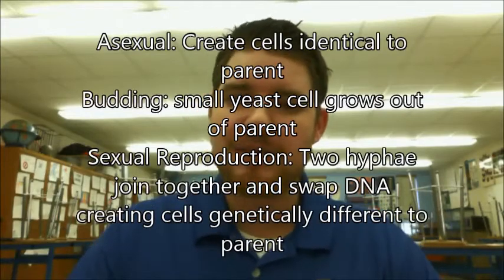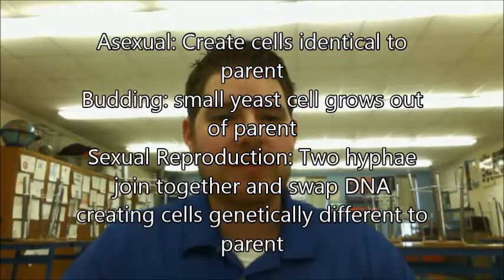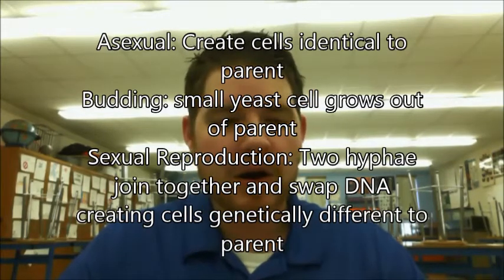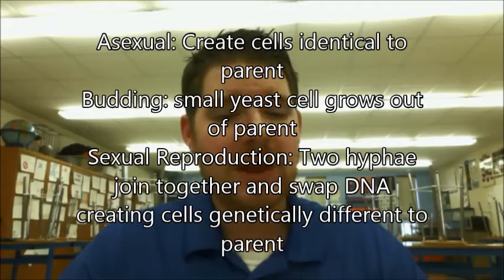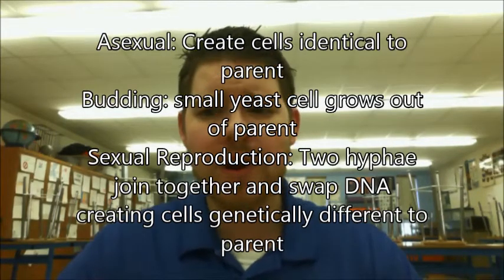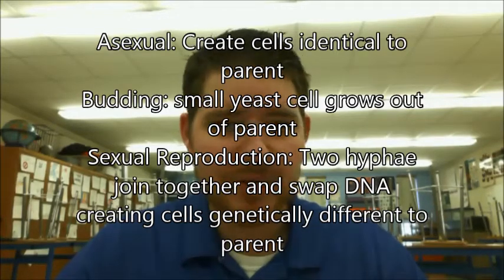There are two reproductive methods for mushrooms — asexual and sexual — much like with bacteria and protists. The asexual method is called budding, which typically happens with yeast cells. A small yeast cell grows out of the parent, starts off small, and eventually grows to full size — basically like growing a human off the side of your face. Budding creates an identical copy of the parent, which applies to bacteria, protists, and fungi alike.